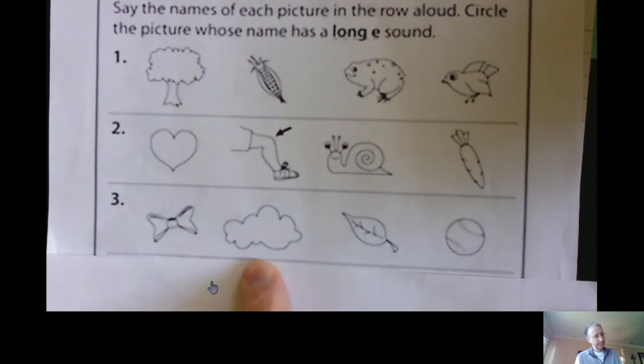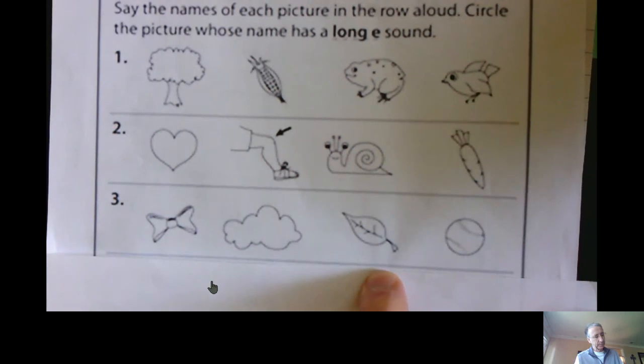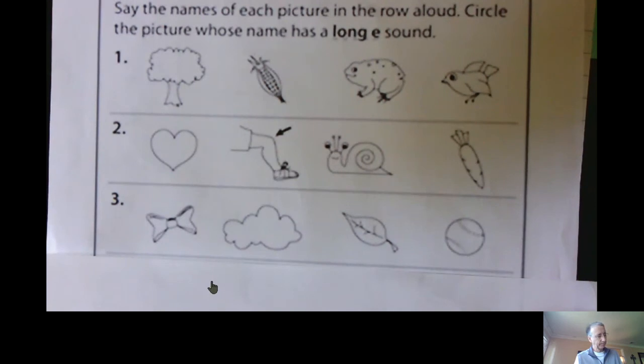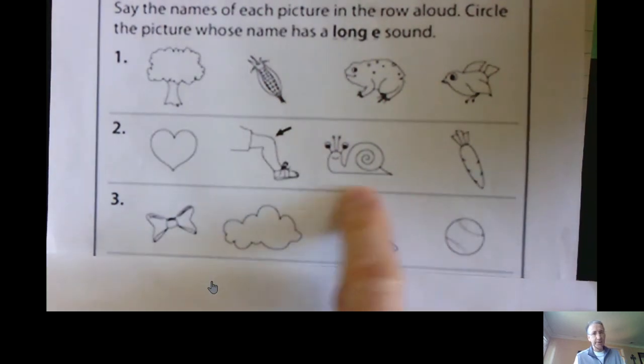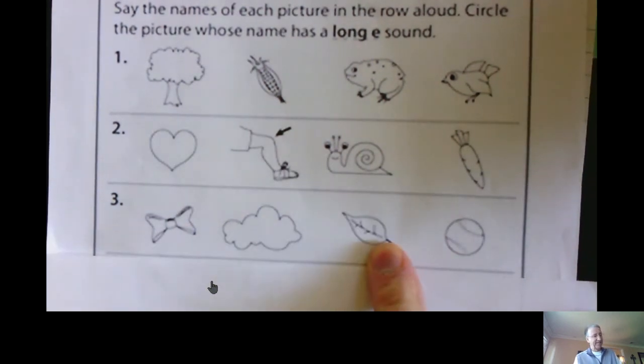Tie, cloud, leaf, ball. Which one has the long E sound? Leaf. The E-A sound. E-A sounds like a long E.